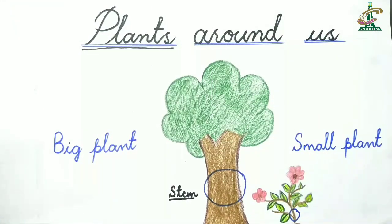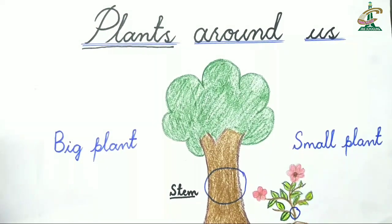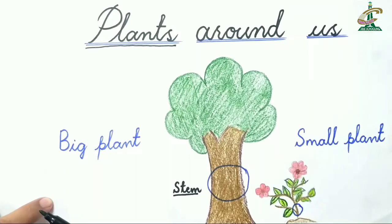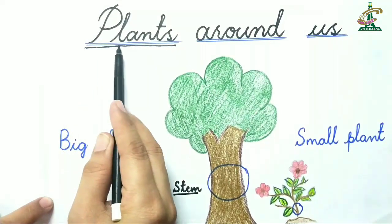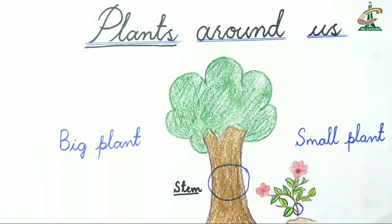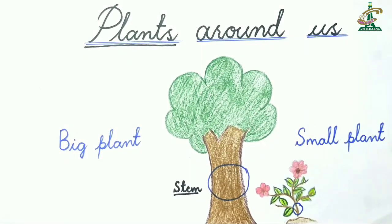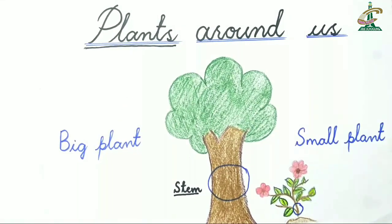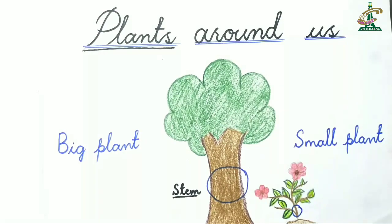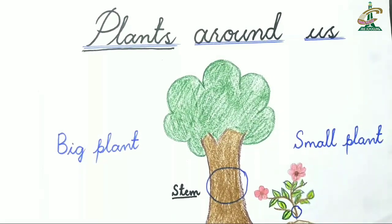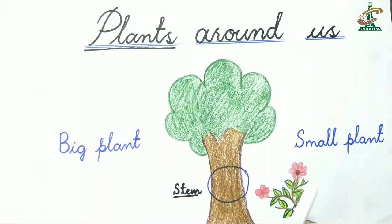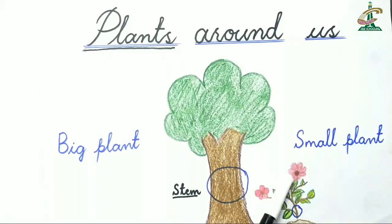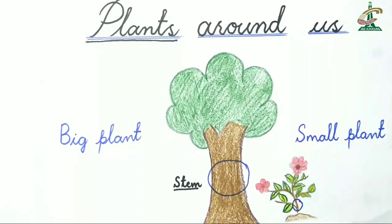Dear students, when you go to the park, what do you see? The green things in the park? Those green things in the park are called plants. So today we will study about plants. You will also note that some plants are very big and some plants are very small.